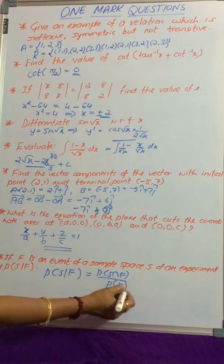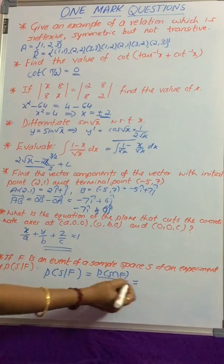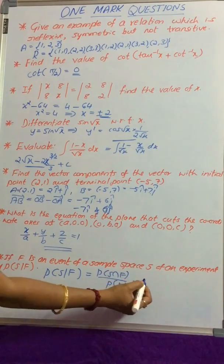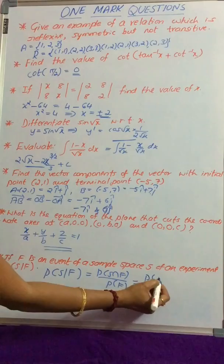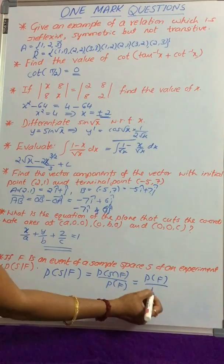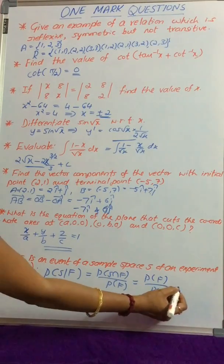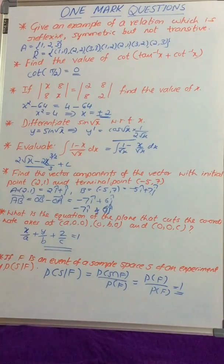The probability of S given F equals P(S∩F)/P(F). Since P(S∩F) equals P(F), this is P(F)/P(F) = 1.